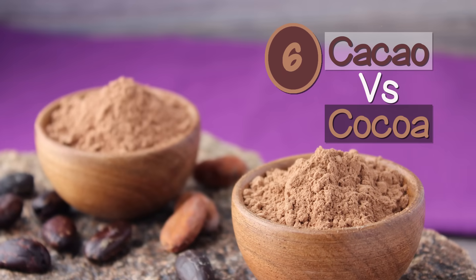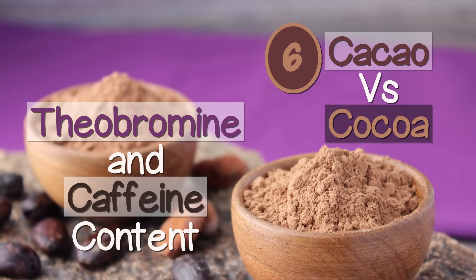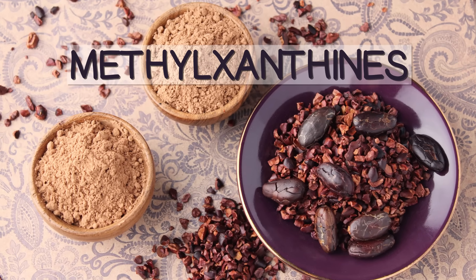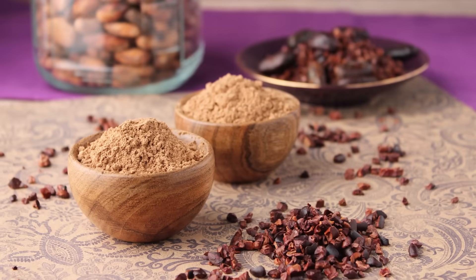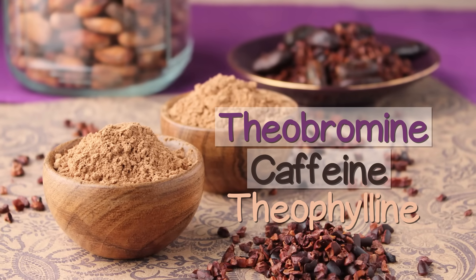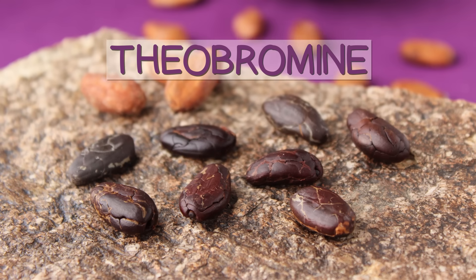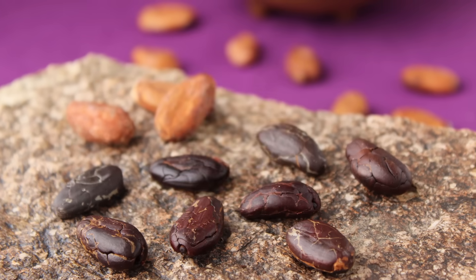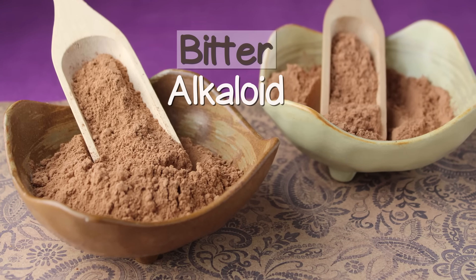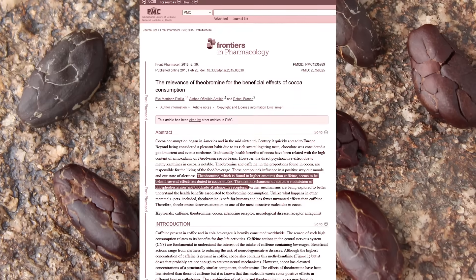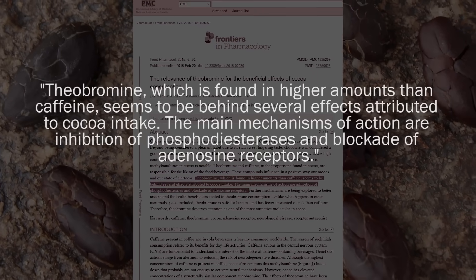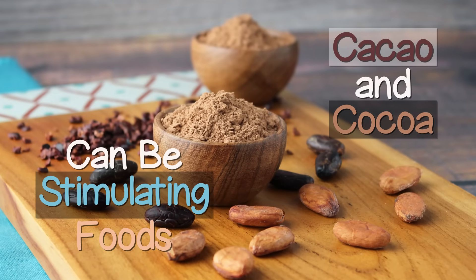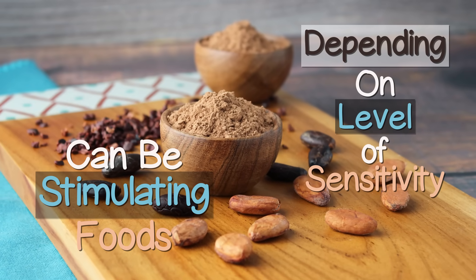Number six: Cacao vs Cocoa — Theobromine and Caffeine Content. Cacao and cocoa contain substances classified as methylxanthines. These are the main alkaloids known as theobromine, caffeine, and to a lesser degree, theophylline. Theobromine, a name derived from the genus Theobroma and Theobroma cacao species, is a bitter alkaloid similar in structural characteristics to caffeine and its ability to cross the blood-brain barrier and bind to or block adenosine receptors. Both cacao and cocoa can therefore be stimulating foods, depending on your level of sensitivity.